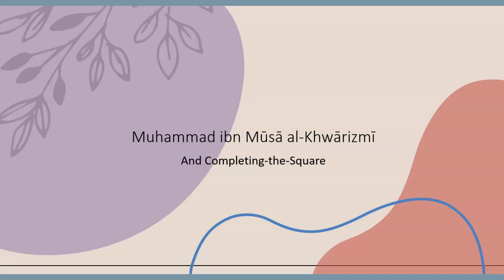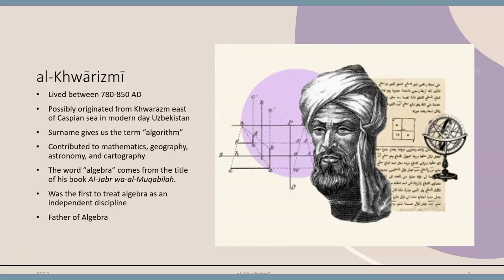Muhammad ibn Musa al-Khwarizmi was a Persian mathematician who produced major works of global influence during the Islamic Golden Age and contributed significantly to mathematics. Al-Khwarizmi lived between 780 and 850 AD and is known as the father of algebra. From his surname, it is probable that he originated from the region east of the Caspian Sea in modern-day Uzbekistan.